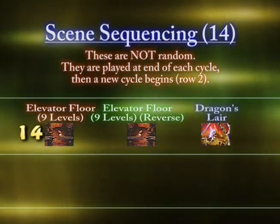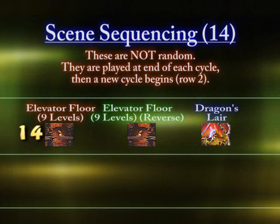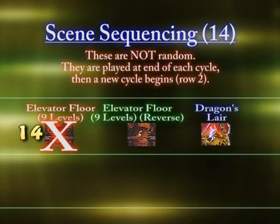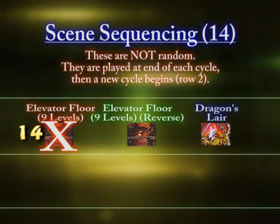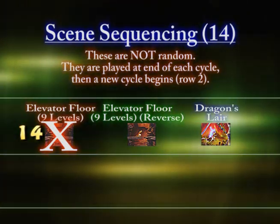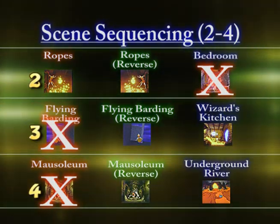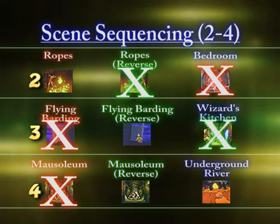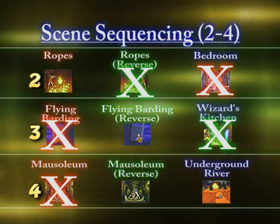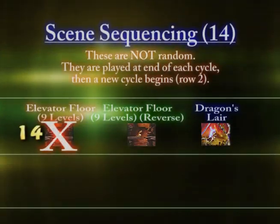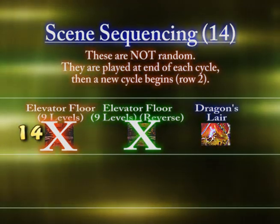After you get through row thirteen, you will come to row fourteen. Row fourteen is not random. Elevator floor nine levels and its reverse are not random. When you come down to row fourteen, it will always play elevator floor nine levels on the first cycle. You have to finish it — it will not play it again later. You keep playing it over and over until you complete this particular level. Then when it's done, it goes back up to row two for the second cycle.